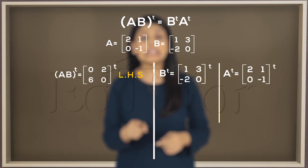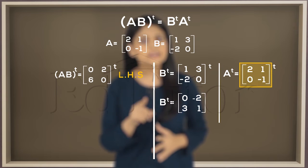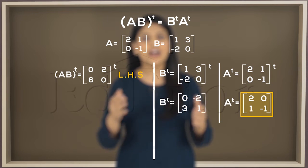This is matrix B. Convert its rows into columns. Similarly, this is matrix A and this is its transpose.